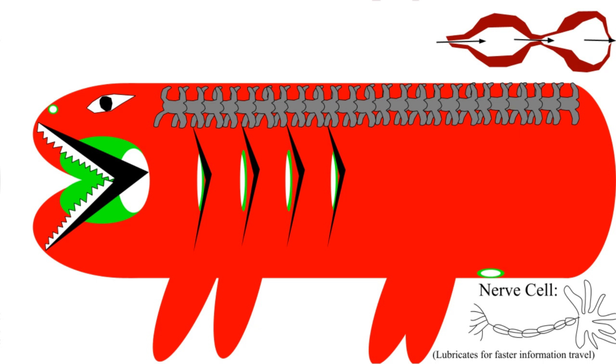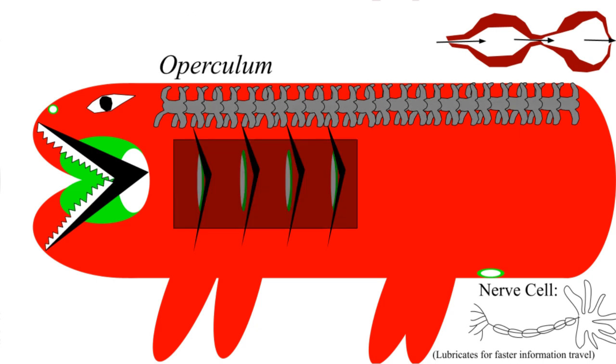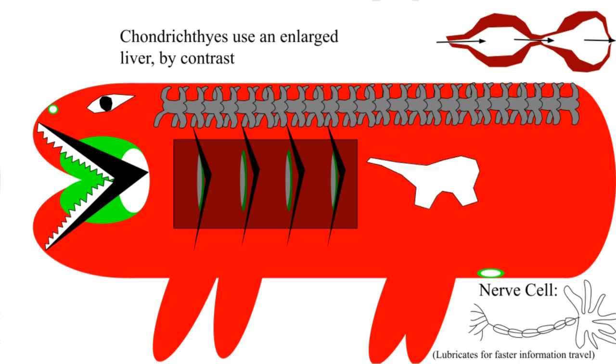Osteichthyes have bone. Chondrichthyes do not. They also possess an operculum, which is a bony plate-type thing that goes over the gills, and a swim bladder, which is a thing full of gas that lets them float.